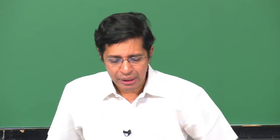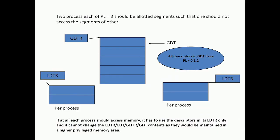If at all each process should access memory, it has to use the descriptors in its LDTR only, and it cannot change the LDTR, the LDT, the GDTR, or the GDT contents, as they would be maintained in a higher-privileged memory area. They are all memory locations, but if I want to change them as a process, I need access to that segment, which would be a privilege 0 segment, so I cannot access it.